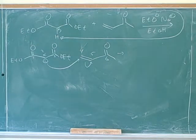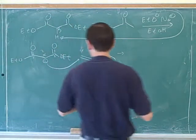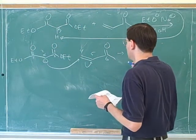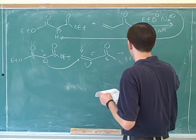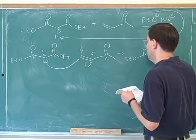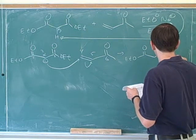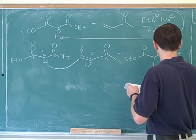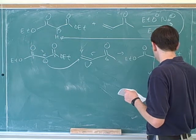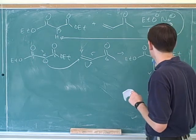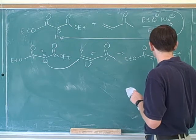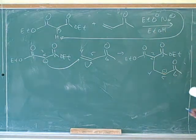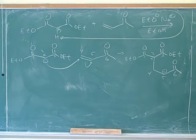Excellent. You used numbering, which was good to help get all the connections right. I think you saw that number 5 would have a negative charge now. That's good. Is this what you got so far?